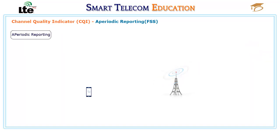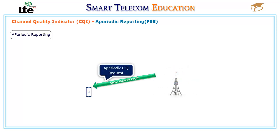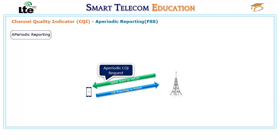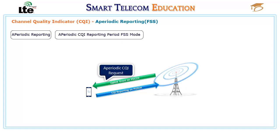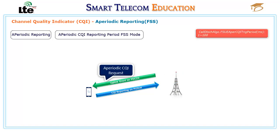Aperiodic reports can be sent only if the E-NodeB requests them as part of an uplink scheduling grant. The UE uses the PUSCH for reporting. The aperiodic reports can be used for wideband and subband CQI. Configurations for aperiodic CQI reporting are different for FSS and FDS modes. Aperiodic CQI reporting is triggered at intervals configured for UEs in FSS mode, and the interval is configured using the FSUE aperiodic CQI triggering period parameter.